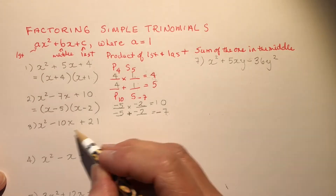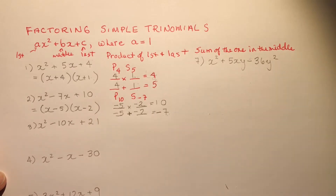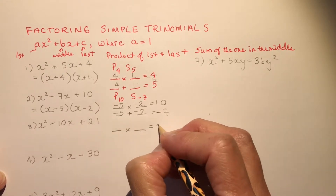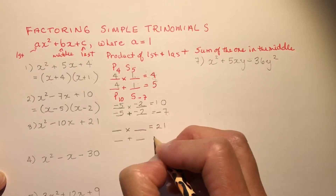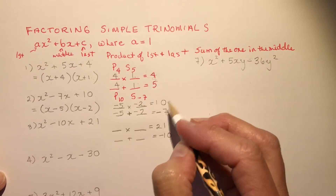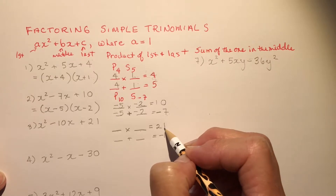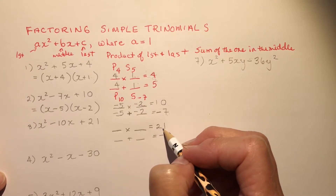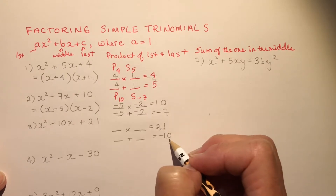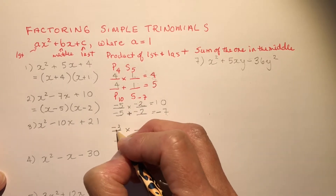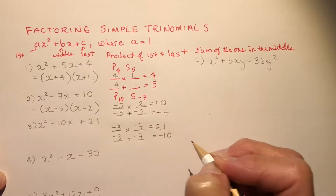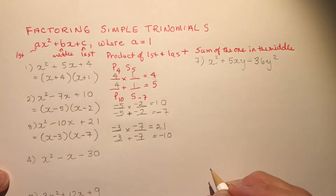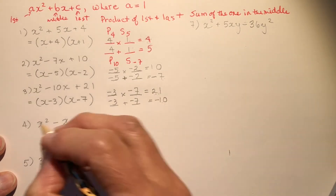The next example: product is 1 times 21 = 21, sum is minus 10. Just like the previous one — positive product, negative sum — both numbers must be negative. Going through factors of 21: 1 and 21, 3 and 7. I can make 10 out of 3 and 7, so it's minus 3 and minus 7. Minus 3 plus minus 7 is minus 10. Plug that in: (x − 3)(x − 7). Done.